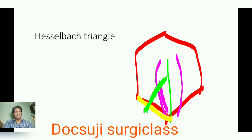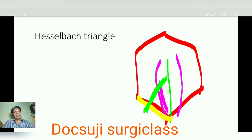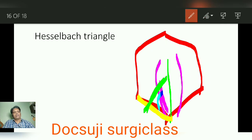The yellow line — specifically the medial part of the inguinal ligament — forms the lower boundary of the triangle. The green line, which is the inferior epigastric vessels, forms the lateral boundary. The pink line forms the medial boundary, which is formed by the lateral border of the rectus abdominis muscle.